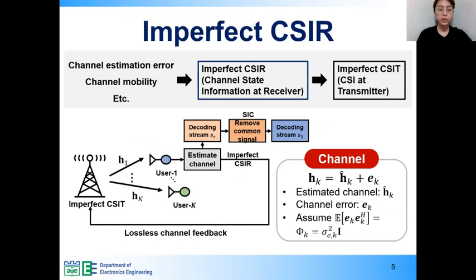Let's move on to the system model of imperfect CSIR. We assume that the user does not know the actual channel due to channel estimation error and channel mobility. Also, to focus on impact of imperfect CSIR for RSMA, we assume that there is no loss in channel feedback. Thus, all users and base station know the expectation of the channel h_k and the covariance of the channel error φ_k. The covariance is assumed to be an identity matrix multiplied by σ²_ek.